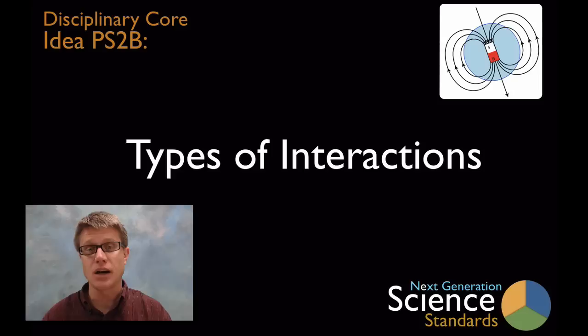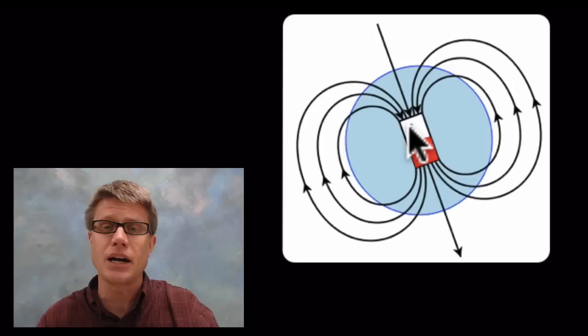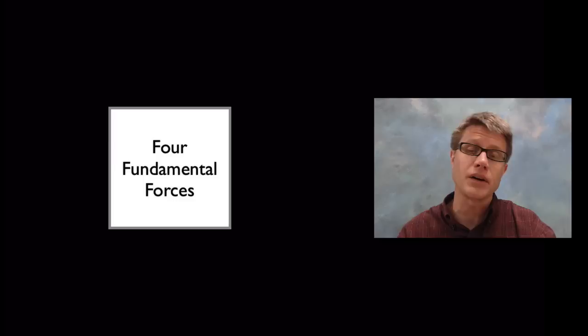Hi, it's Paul Anderson and welcome to disciplinary core idea PS2B on types of interactions between objects. If you were to add one term to your vocabulary it would be the idea of a field. If you have a magnet with a north and a south pole, there are invisible fields that move outside of it and allow objects to interact with one another.